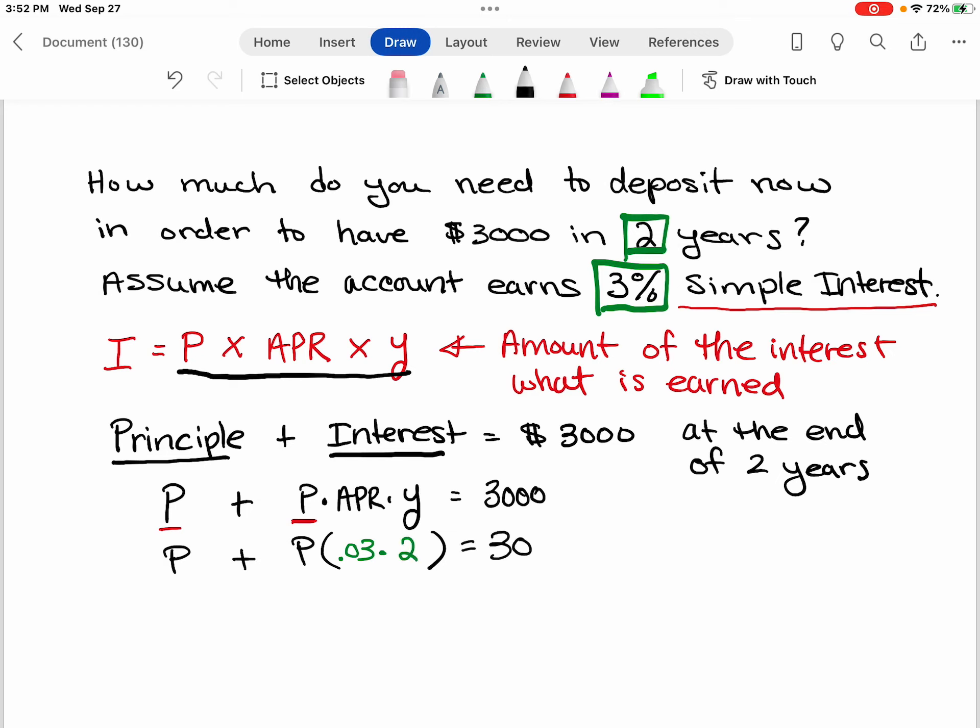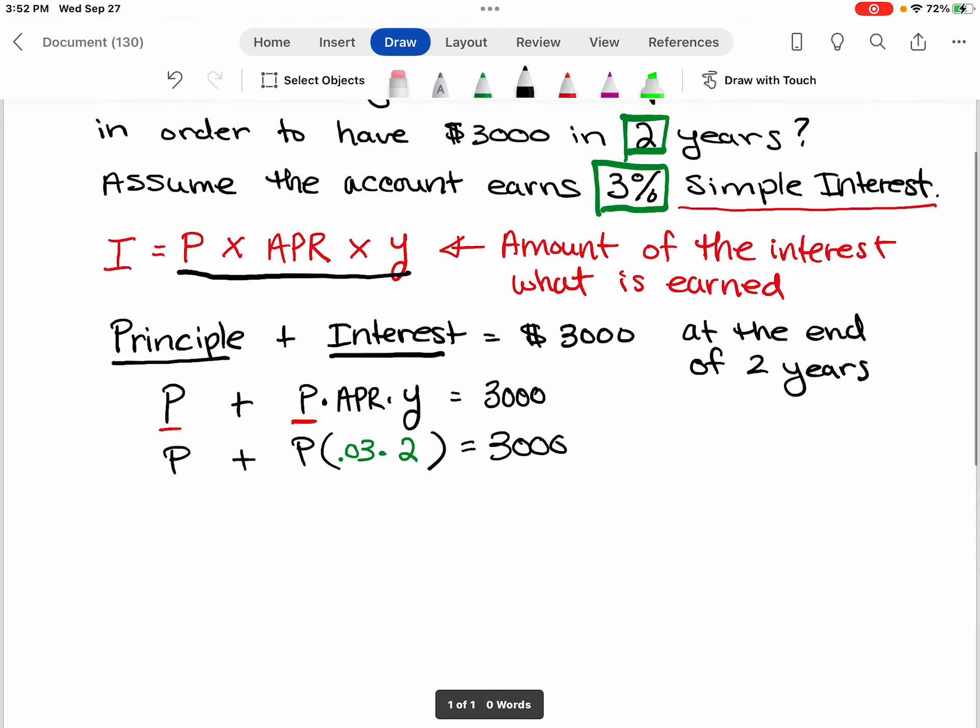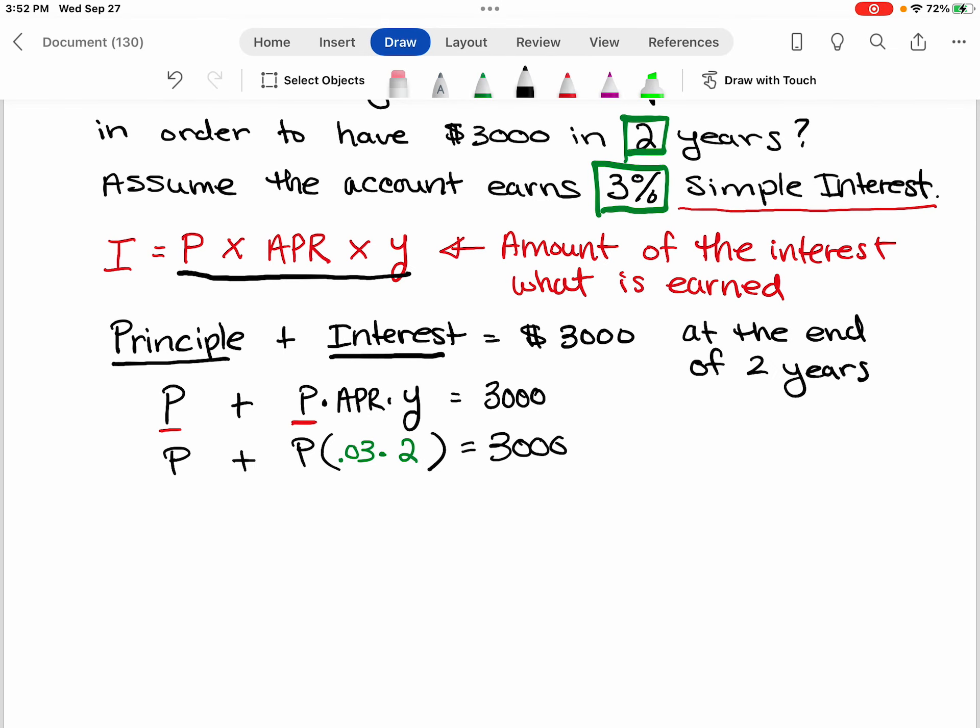And that will give us $3,000. So now if I take the 0.03 times 2, that's going to give me 0.06 times P. So I have P plus 0.06 times P is equal to 3000.